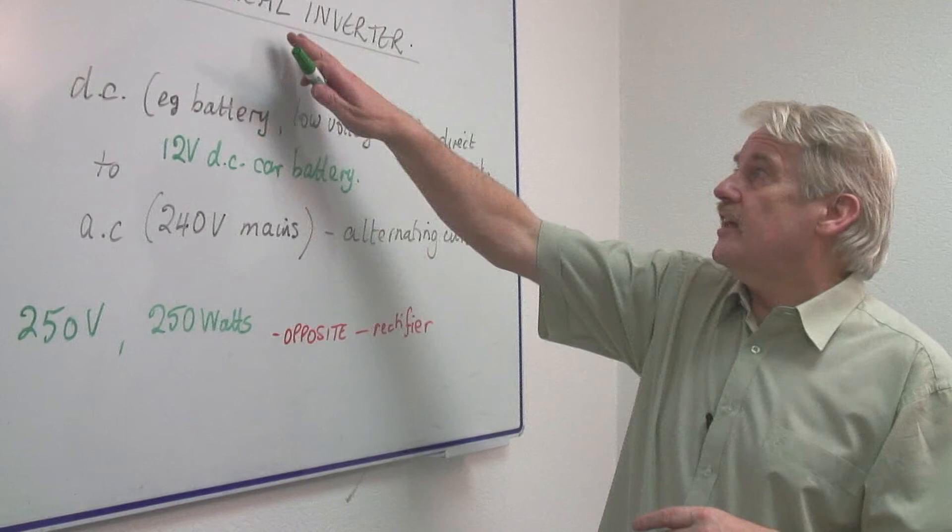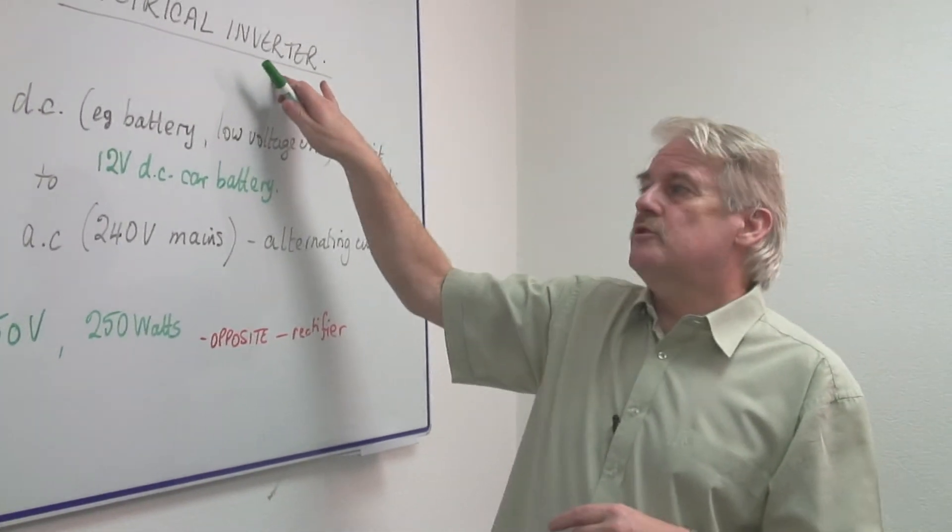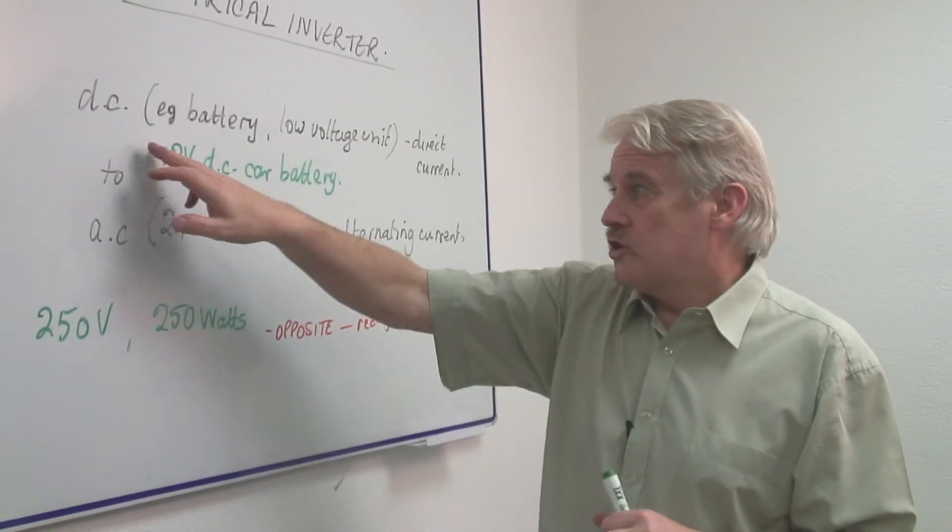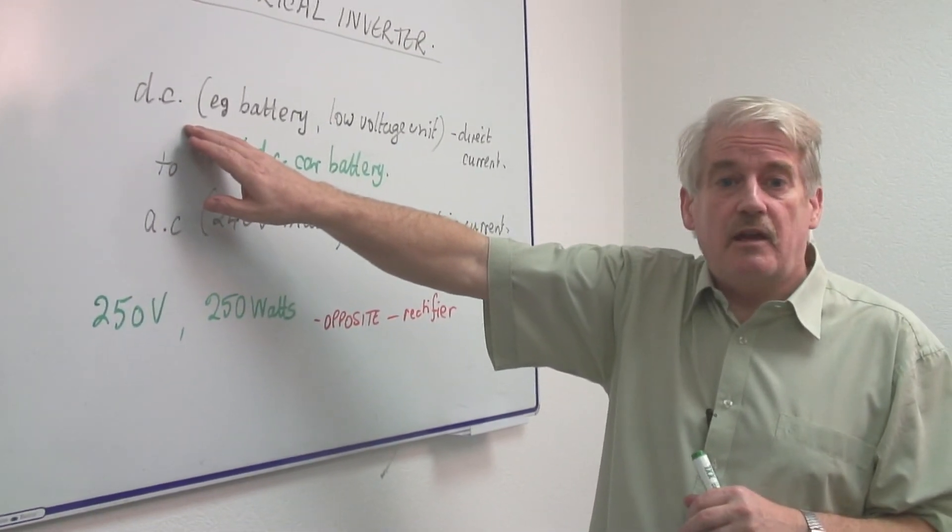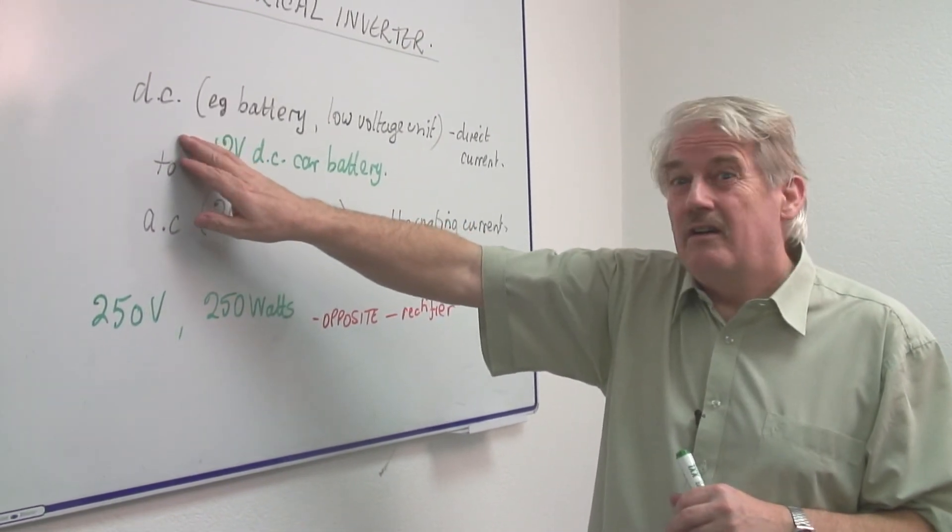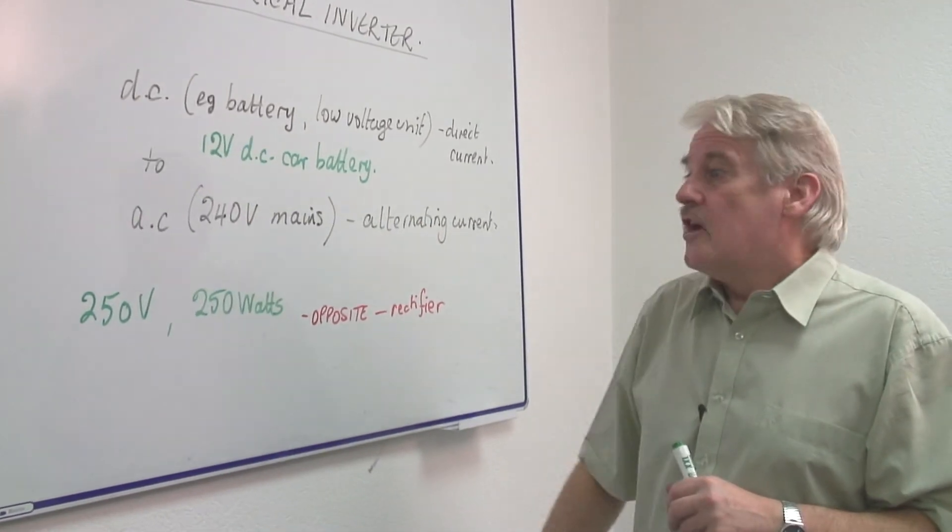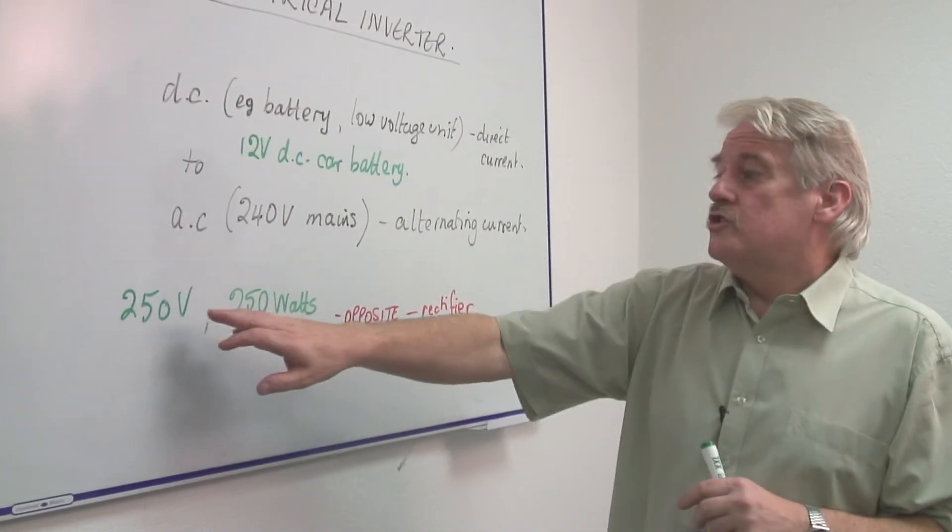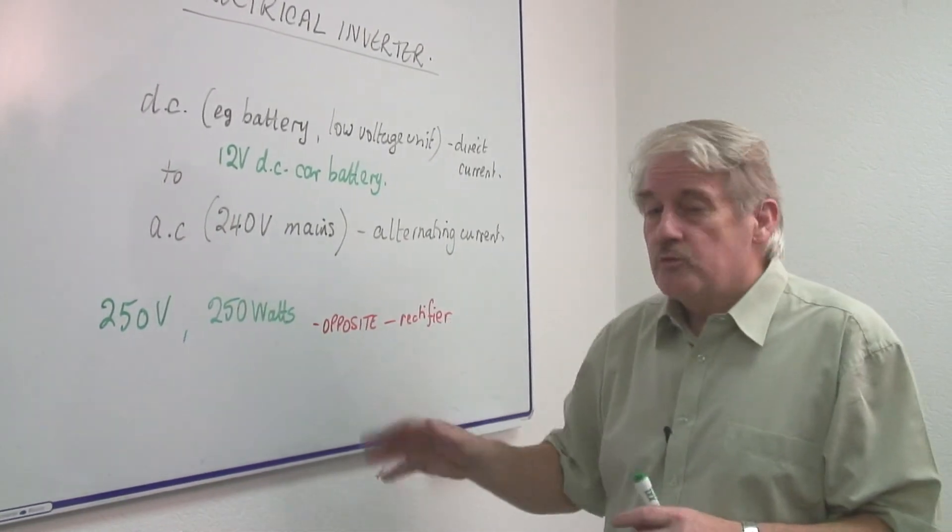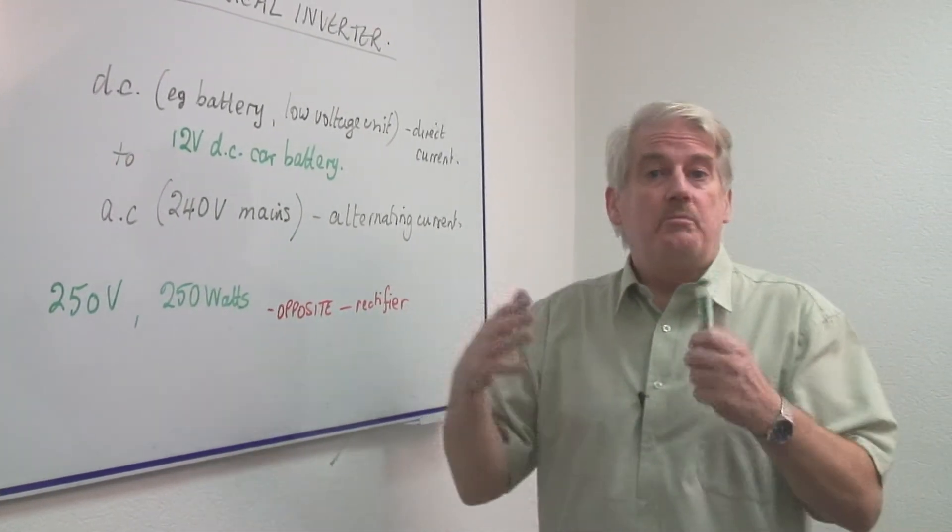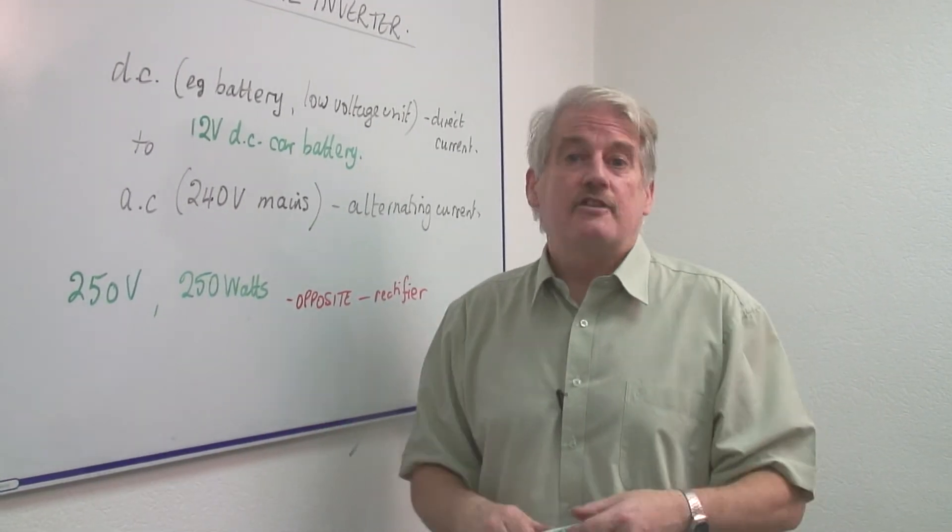So basically, the electrical inverter enables you to use a 12 volt or a low voltage DC supply, usually a car battery, to produce 250 volts alternating current into which you can plug your appliances, your laptops and so on.